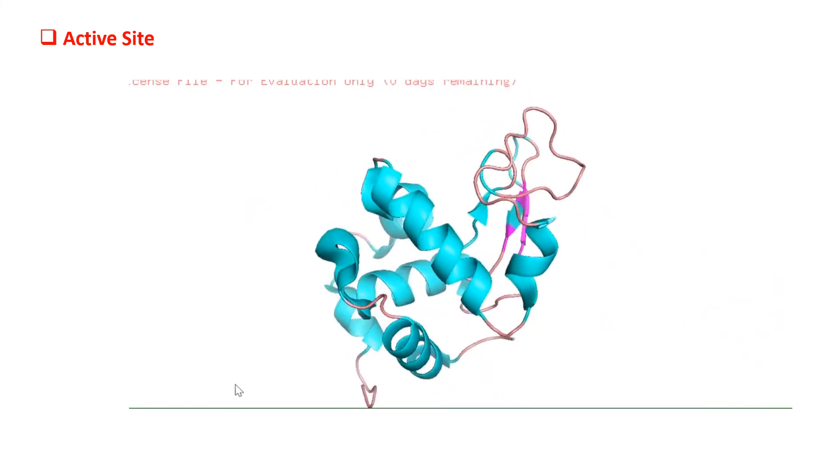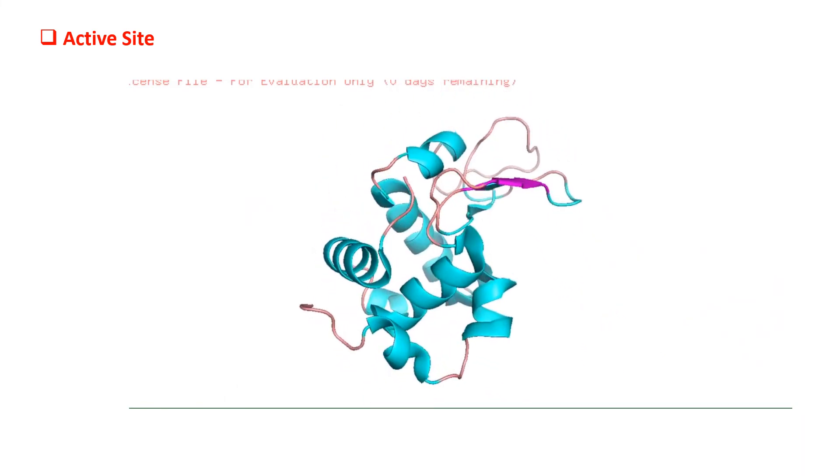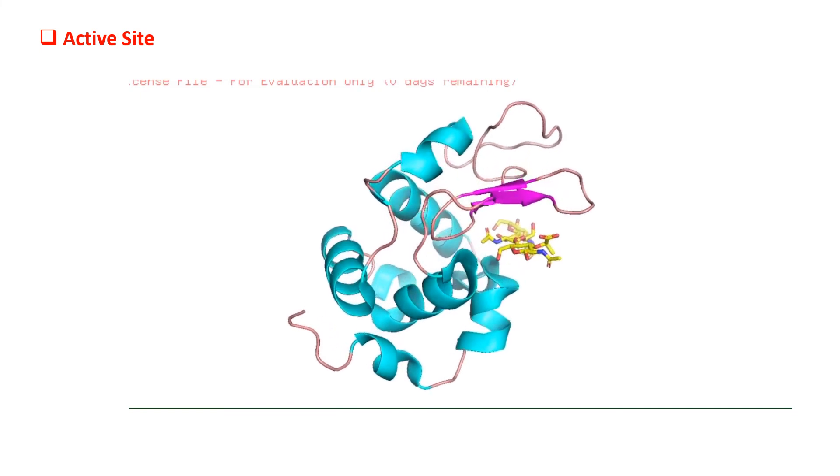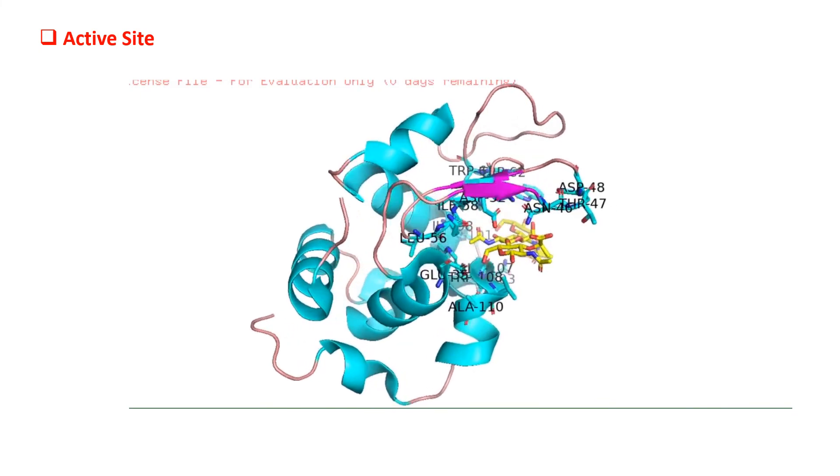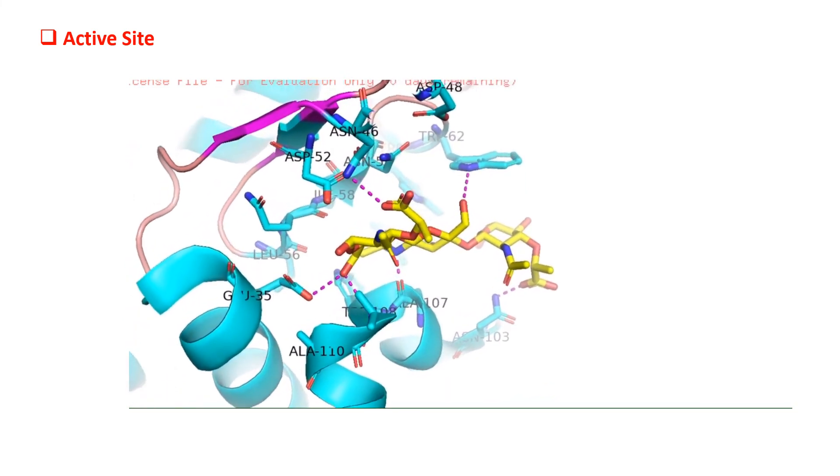Here is a closer view of the active site of the enzyme. Two amino acids play vital roles to break the glycosidic bond: glutamate 35 and aspartate 52. Together they interact with the NAM and NAG residues to hydrolyze the glycosidic bond.